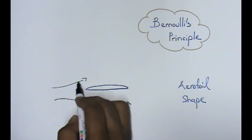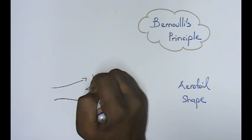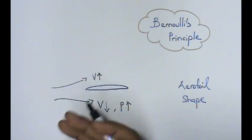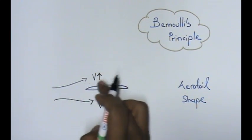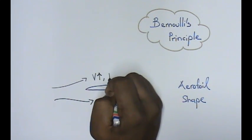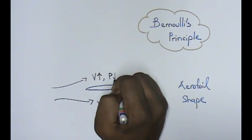And when the air moves on top, the velocity will be high. The velocity of air travelling on top is high, but the pressure will be low.